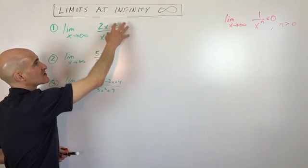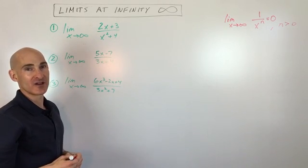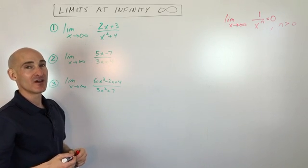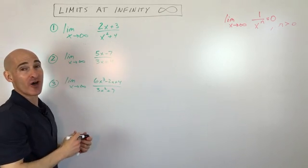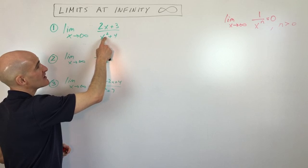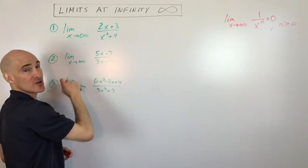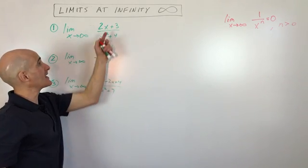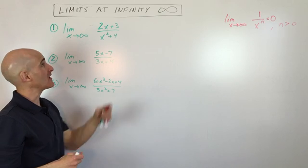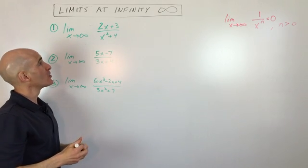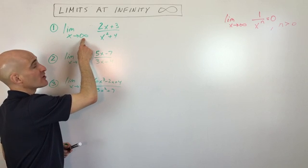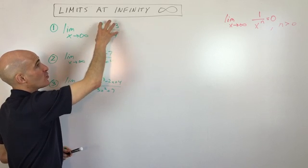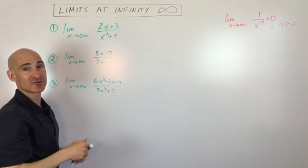As x gets larger and larger, what happens to this whole quantity? You can probably guess. If you guessed that the whole thing is going to get smaller and smaller, you're right. The reason is because the denominator's highest degree term — see the x squared? — is growing at a faster rate than the numerator's highest degree term, which is only x to the first. So as x approaches infinity, this is going to outpace and the whole quantity is going to get smaller and smaller, approaching zero.